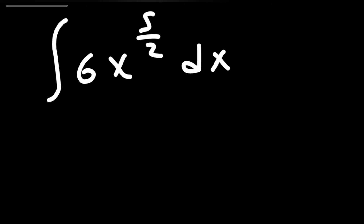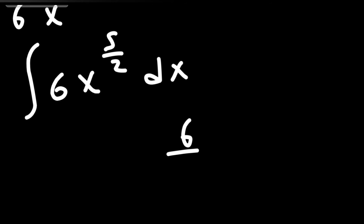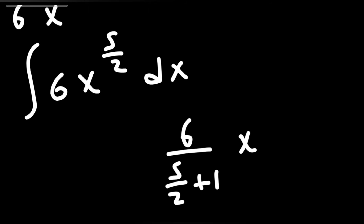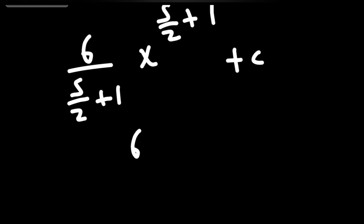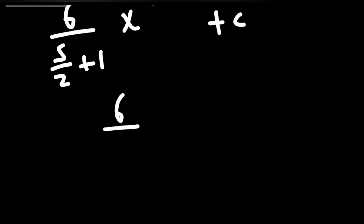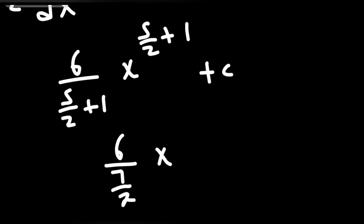Integrate 6x^(5/2) using the formula k times x^n → k over (n+1) times x^(n+1). Here k=6 and n = 5/2, so n+1 = 5/2 + 1 = 7/2. We get 6 over (7/2) times x^(7/2) plus C.